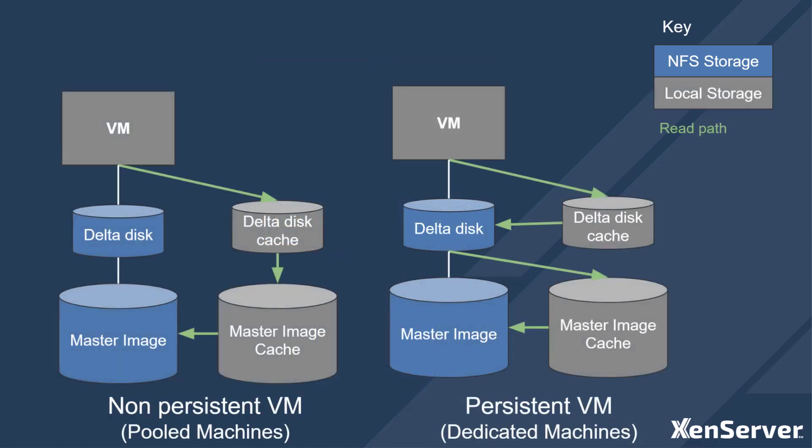Let's look at the read path for the data. For non-persistent VMs that are reset to initial state each boot, data is first read from the delta disk cache. There will never be any data in the delta disk itself for these VMs, as the machine cleans on each boot so there will be no content to persist. If the data needed is not in the delta cache, it looks in the master image cache. And finally, if it still can't find the data it needs, it reads from the master image and caches the data into the master image cache so it is there for the next read.